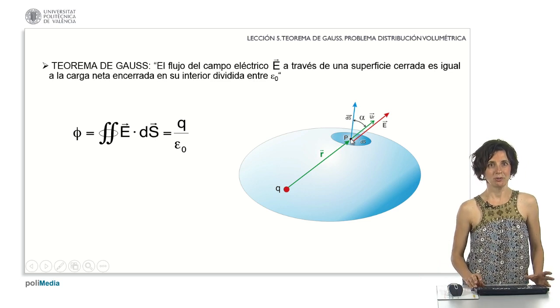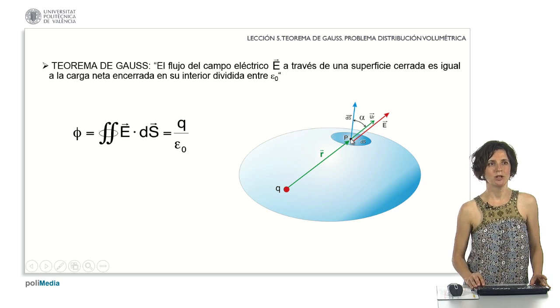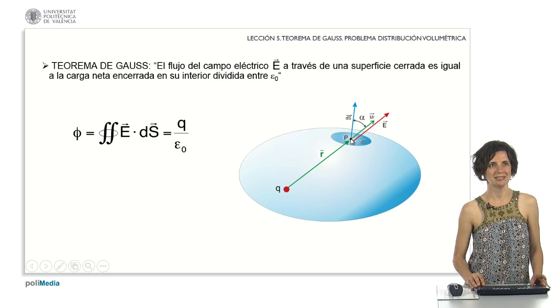Gauss's law is used to calculate, in a simpler way, the modulus of the electric field created by charge distributions with symmetry.